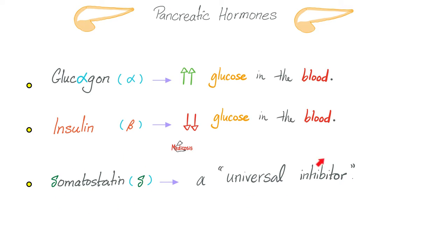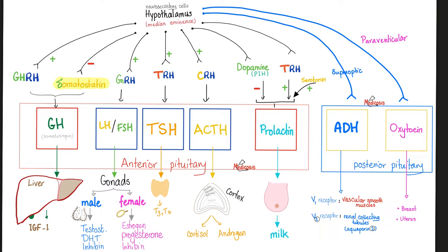So what does somatostatin do? It's a universal inhibitor — it inhibits everything. It inhibits the release of gastrin, insulin, glucagon, and everything you can imagine. It even inhibits its own secretion. But it's not just in the pancreas. Somatostatin is also released by the hypothalamus, and it is anti-growth hormone. When the hypothalamus releases growth hormone-releasing hormone, it boosts production of growth hormone. But when the hypothalamus releases somatostatin, it decreases the release of growth hormone from the anterior pituitary.